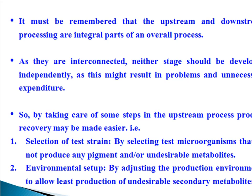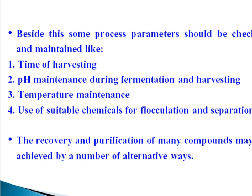For example, selection of test strain by selecting test microorganisms that do not produce any pigment and/or undesirable metabolites; and environmental setup by adjusting the production environments to allow least production of undesirable and secondary metabolites. Besides this, some process parameters should be checked and maintained like time of harvesting, pH maintenance during fermentation and harvesting, temperature maintenance, and use of suitable chemicals for flocculation and separation.